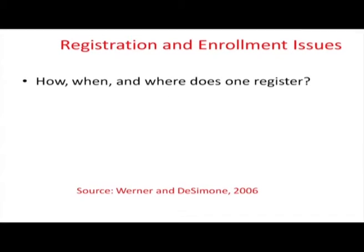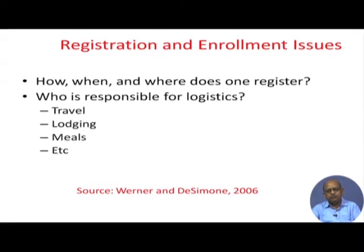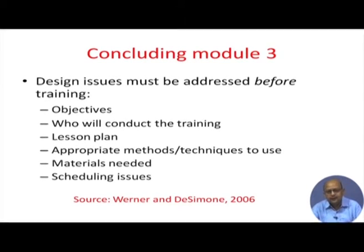Other issues include registration and enrollment in the training program. The HRD department communicates with potential trainees, providing all necessary information about when and where training occurs and how to register. For external training, board, lodging, and transport must be managed well so these do not become barriers to learning. If trainees are preoccupied with logistics, they will not be able to concentrate and focus on learning activities — so the organization must take care of these aspects.